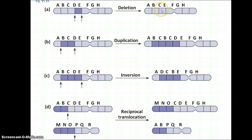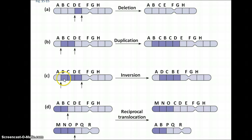You can see a segment that is lost, and that segment can then be transferred to another chromosome. Duplications can occur — a portion is broken off of one and placed on another chromosome. In inversions, rather than the sequence BCDE, it switches and becomes DCBE. And then translocation involves a portion of a chromosome moving from one chromosome to another.